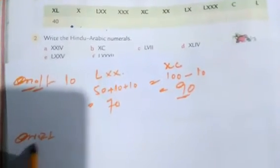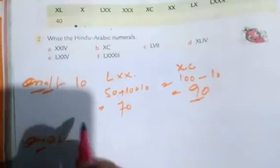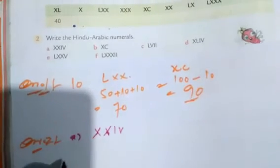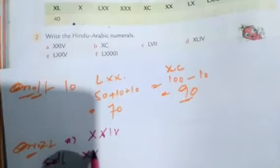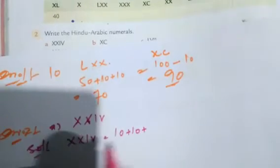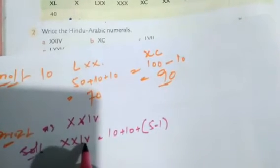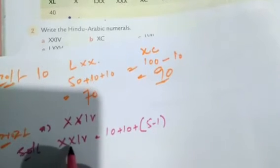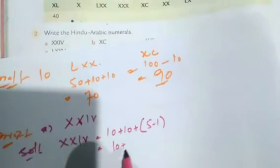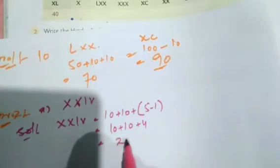Question number 2: write the Hindu-Arabic numeral. For the first part, XXIV — X means 10, X means 10, and IV means five minus one equals four. So 10 plus 10 plus 4 equals 24. The answer is 24.